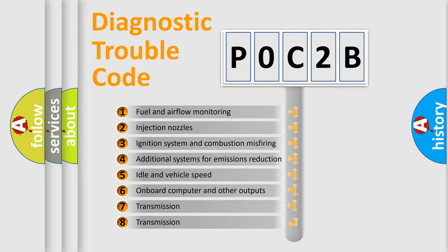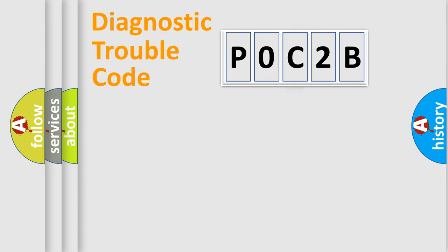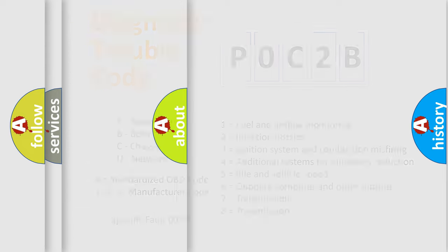The third character specifies a subset of errors. The distribution shown is valid only for the standardized DTC code. Only the last two characters define the specific fault of the group. Let's not forget that such a division is valid only if the second character code is expressed by the number zero.